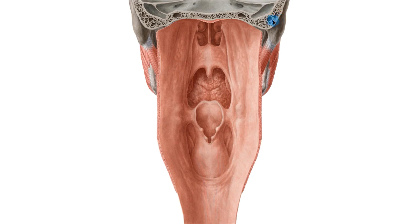A bit more of location here to understand what's going on. On this image we're looking at the posterior view of the skull where you see here these two landmarks which are the mastoid processes. Notice here also the sternocleidomastoid muscles and a bit of the masseter muscles which are attached to the lower jaw.